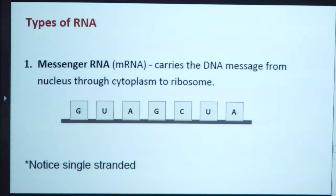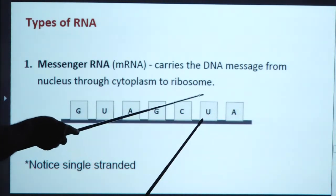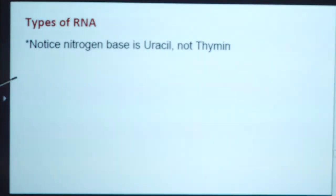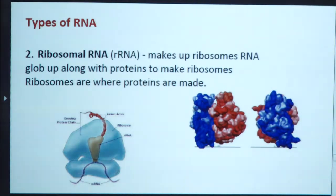There are different types of RNA. First is messenger RNA (mRNA), which carries the DNA message from the nucleus through the cytoplasm to ribosomes in cells — its bases include guanine, uracil, adenine, guanine, cytosine, uracil, and adenine. Second is ribosomal RNA (rRNA), which makes up ribosomes. RNA combines with proteins to make ribosomes, and ribosomes are where proteins are made — they are the sites where protein synthesis is completed.